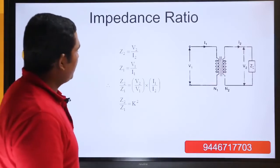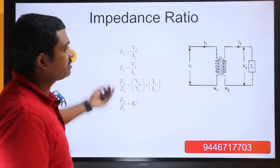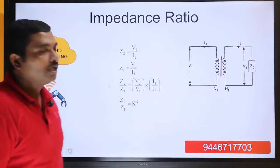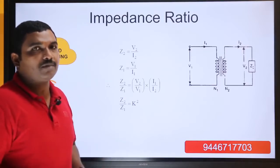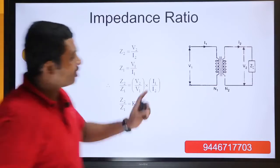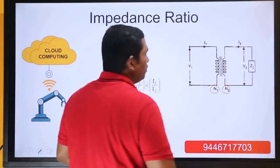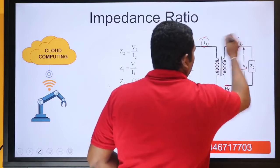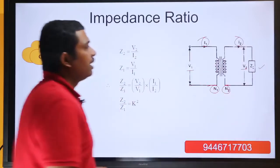Now we are going to the topic called impedance ratio. This topic is very important because we want to convert our transformer from secondary to primary and also from primary to secondary. This is our normal transformer having primary turns N1, secondary turns N2, primary voltage V1, secondary voltage V2, primary current I1, secondary current I2, and then there is a load.